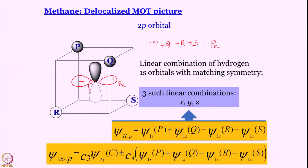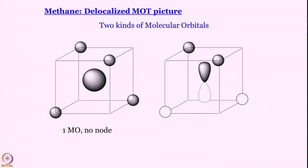For the 2py orbital — where the lobe pointing toward us is minus and the one behind is plus — the right combination requires p and s to have plus sign, and q and r to have minus sign, giving the SALC: +p − q − r + s. This is the SALC with the right symmetry for forming bonding and antibonding MOs with the 2py orbital of the central carbon atom. So we have three such linear combinations, one for each p orbital.